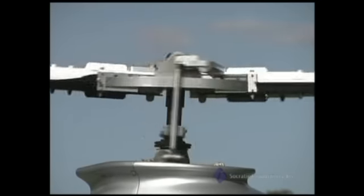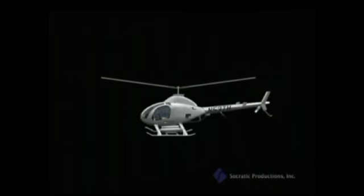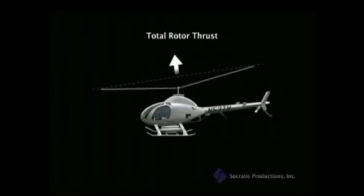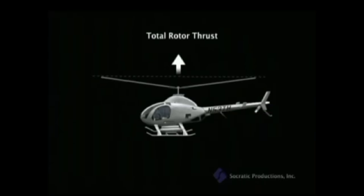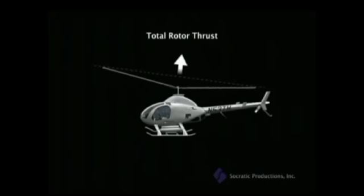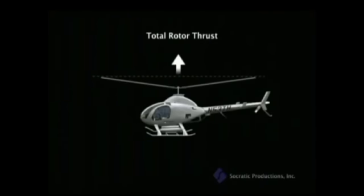As the rotor blades spin, they create an aerodynamic force, which is a combination of lift and thrust — we'll call this total rotor thrust. An important thing to remember is that total rotor thrust is always perpendicular to the tip-path plane of the blades. In this animation, you can see that total rotor thrust is not always 90 degrees relative to the helicopter, but 90 degrees relative to the path of the tips of the rotor blades. The ability to vary the magnitude and direction of total rotor thrust is what allows us to control the helicopter.